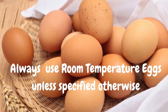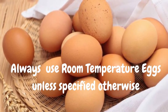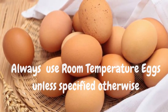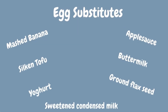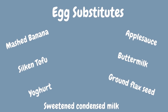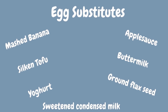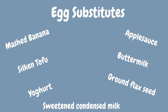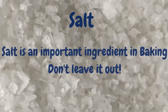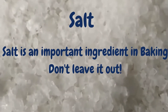Also, use room temperature eggs unless specified otherwise, as it can affect the consistency of your batter. Eggs are important in baking, but there are lots of other egg substitutes if you want to explore these.